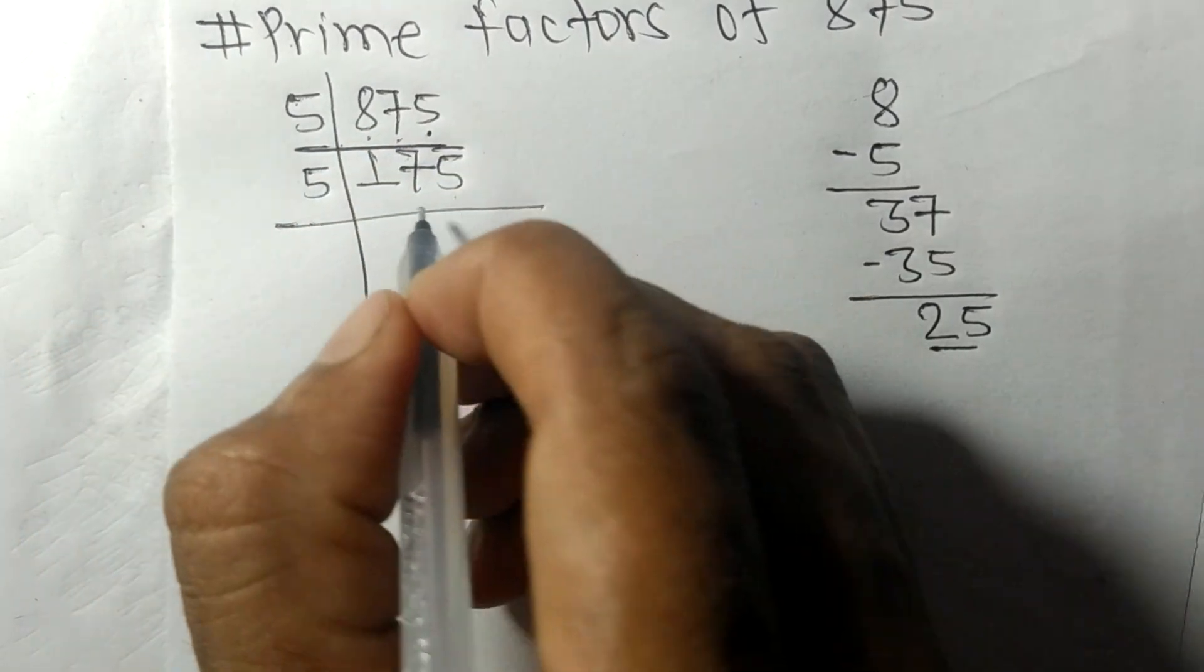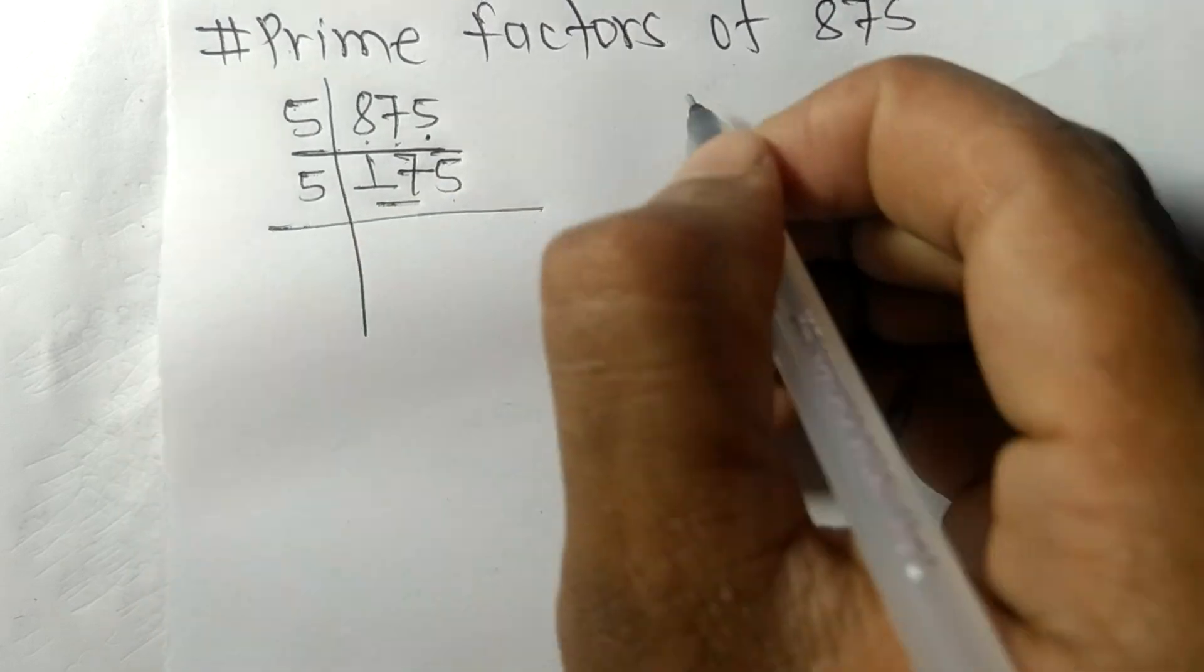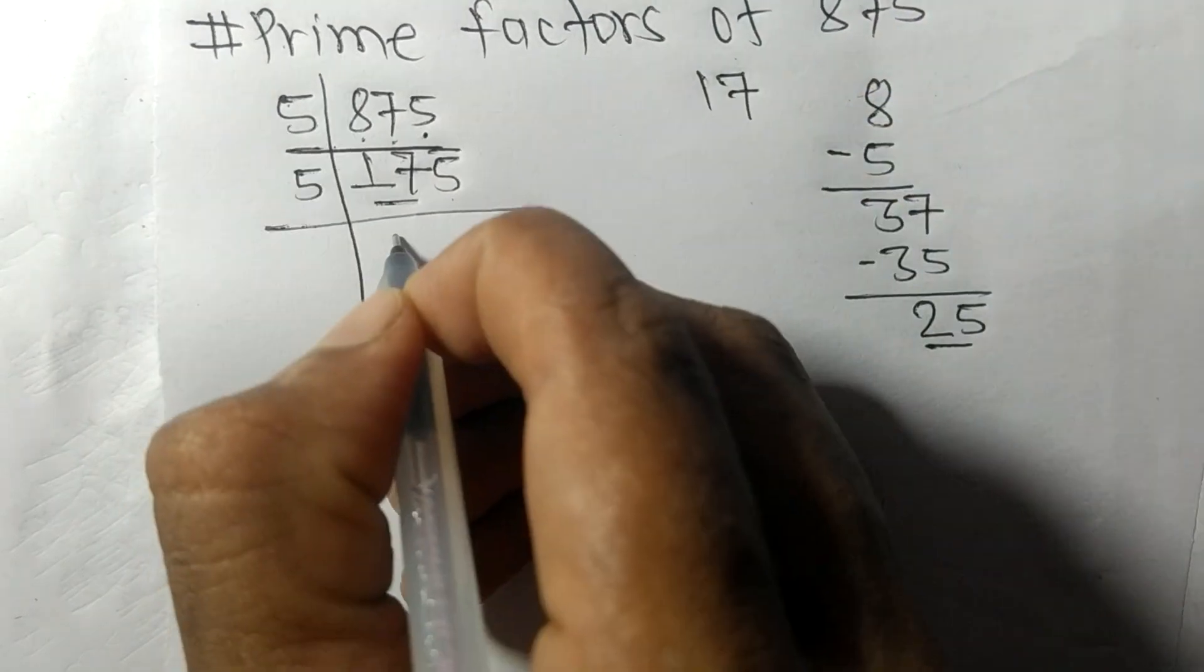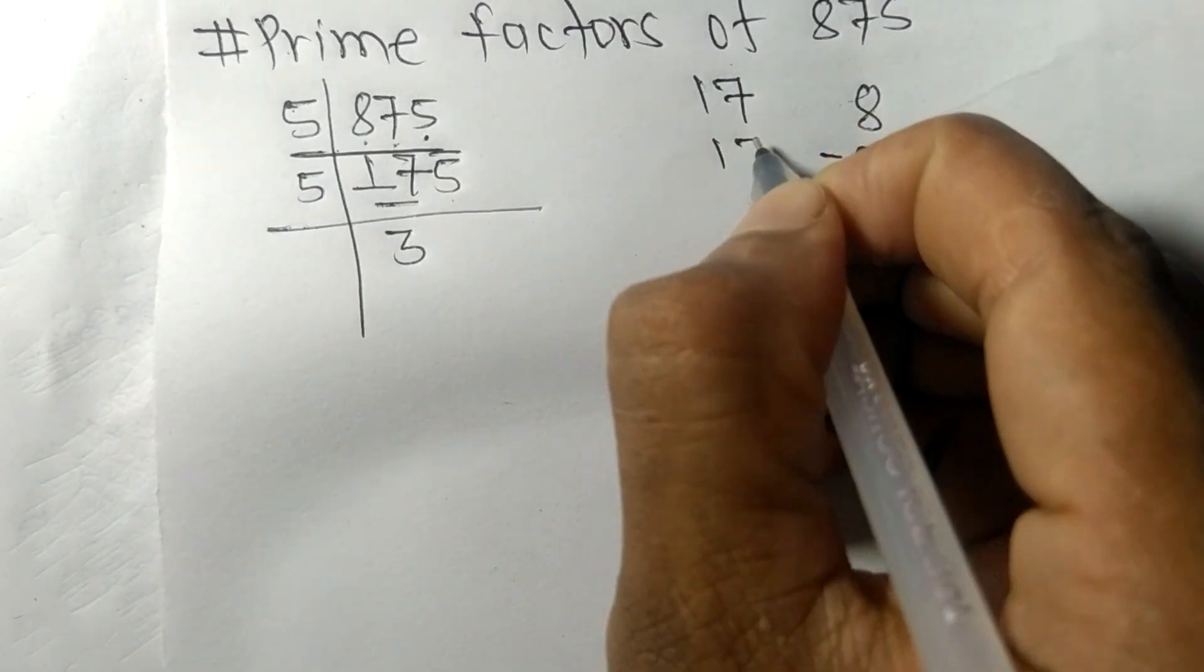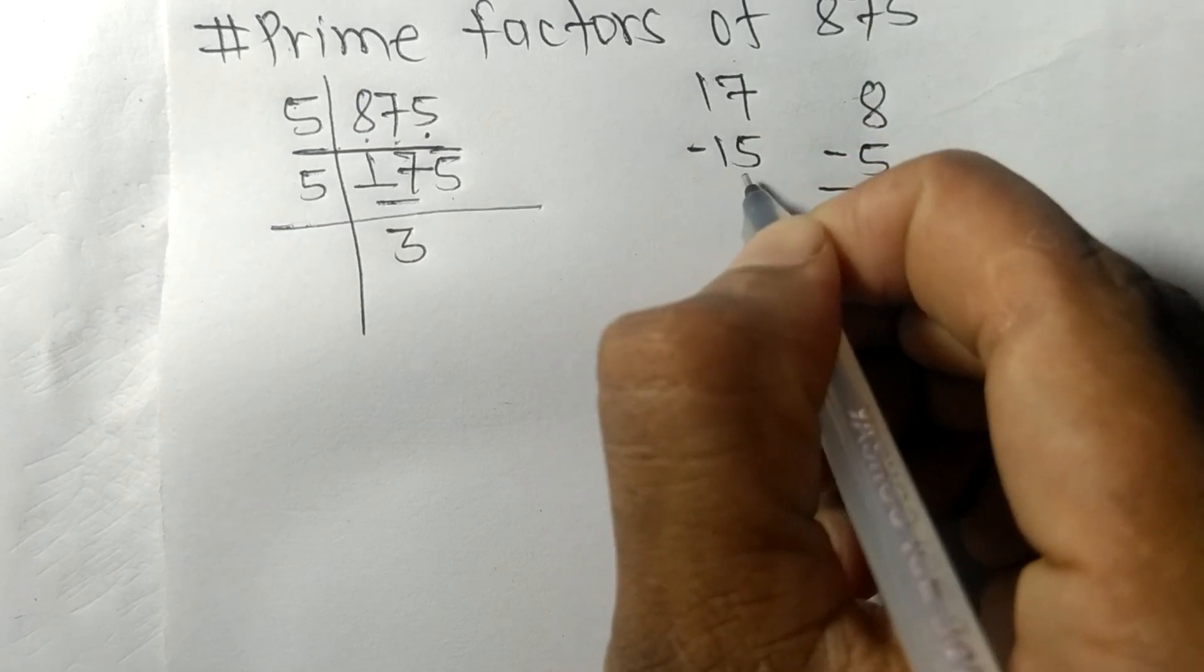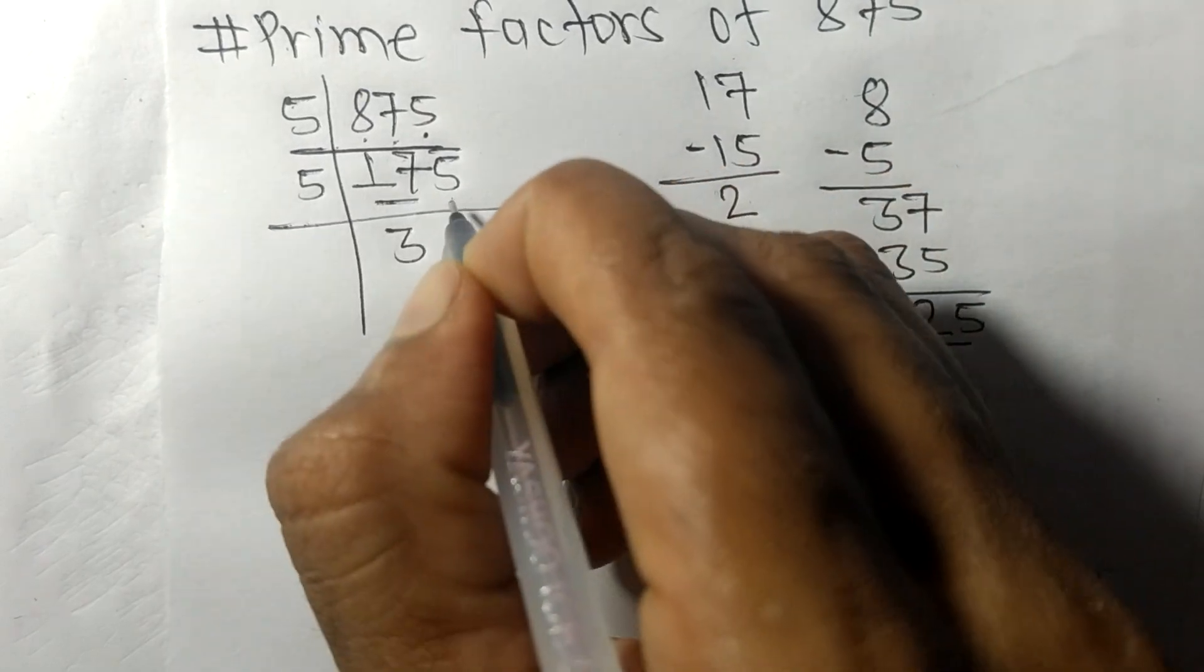Here we have 17. So 5 times 3 equals 15. On subtracting we get 2, and this 5, 25. 5 times 5 equals 25.